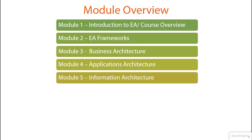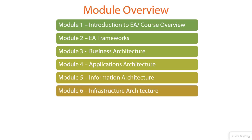Module 5 introduces the principle of using information as an enterprise asset and signifies the opportunity presented through strategic deployment of this principle across the enterprise through information architecture. Module 6 explores the technology or the infrastructure component of the enterprise architecture and offers a quick roundup of the key building blocks of the infrastructure component, and also explores the future trends and directions in this space.